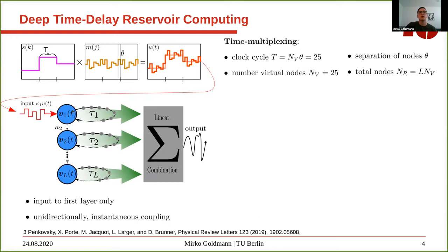The reservoir is given by several layers shown in blue, from V1 to V_L. The input only goes to the first layer, and then the layers are connected in a unidirectional manner with instantaneous coupling. Additionally, every layer features a self-feedback loop with a delay tau. The delays can be different between layers and can be set arbitrarily. In the output layer, we record all states of the reservoir and do a simple linear combination with the trained weights.